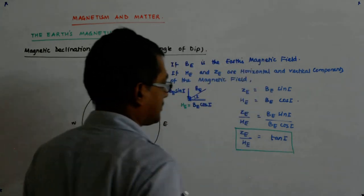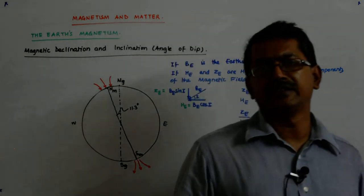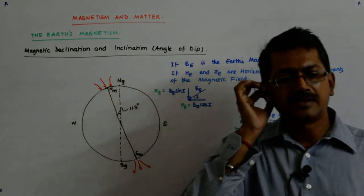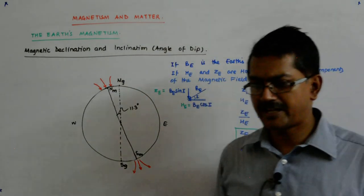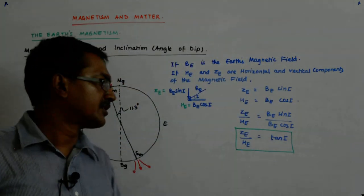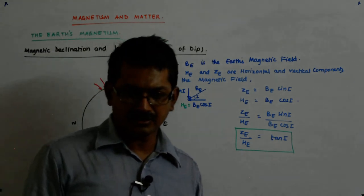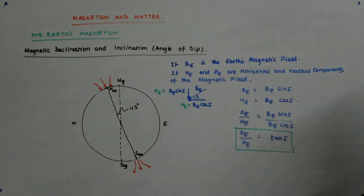ZE upon HE is my tan I. Do we get that? The same thing will be applicable even if the needle was tilting upwards. Even if the needle was tilting upwards, the same formula would have been in place.